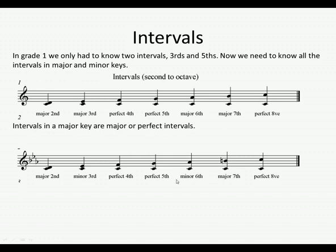Now we enter a minor key — this is C minor, which has three flats, and obviously your raised seventh, making it a B natural. C to D would be a major second. C to E flat — remember that there is a flat in the key signature, so this is an E flat — C to E flat would be a minor third. C to E natural is a major third; C to E flat is a minor third. C to F — perfect fourth, the same as in the major, because it's C to F natural. Same with C to G — perfect fifth.